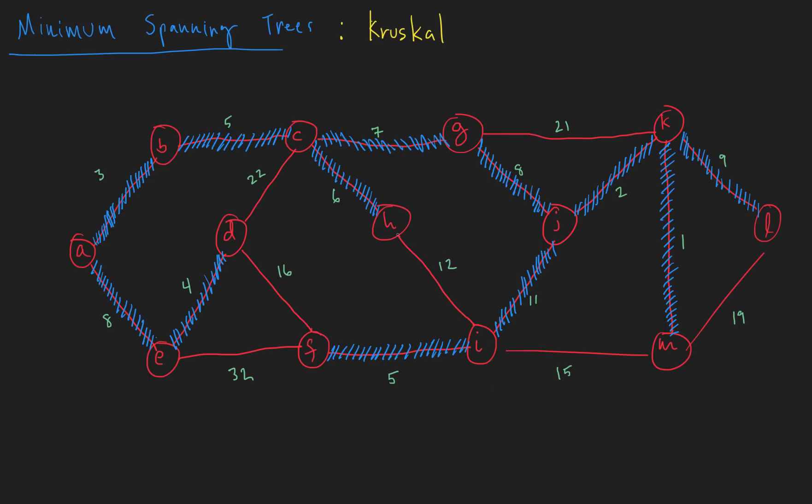Twelve would be next. Now, twelve, you can see, if we add this, we're going to create a cycle right here. And we do not want any cycles, because then we wouldn't have a tree anymore. A tree has no cycles, by the way. So we're going to skip that one. We're not going to add that one to the tree.